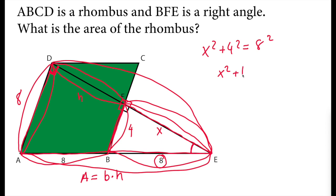X squared plus 16 equals 64. So we subtract 16 from both sides. X squared is equal to 48 and X is square root of 48.